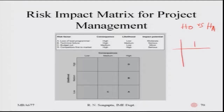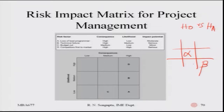The errors, if you remember, form a chart similar to a matrix where the values of alpha and beta represent type one risk and type two risk. The example I am going to give may not be directly relevant to project management as such, but it will give you a good idea of how the concept of probabilities and hypothesis testing can be utilized.